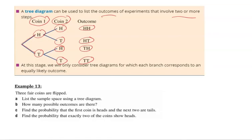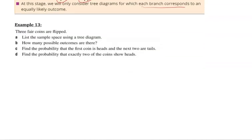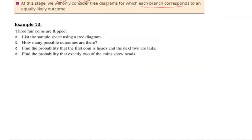At this stage, we'll only consider tree diagrams for which each branch corresponds to an equally likely outcome. A coin flip is 50-50. So here, a fair coin—three fair coins are flipped.